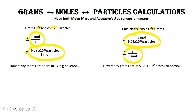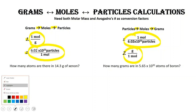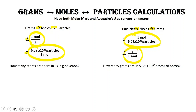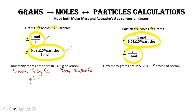I will do the first one with you, and you can practice doing the next one on your own. Let's start so we can see how to set up this problem. The problem asks: how many atoms are there in 14.3 grams of xenon? So what we're given is 14.3 grams of xenon, and what we need is the number of atoms of xenon. We go from grams of A, to moles of A, to particles of A—first using molar mass, then Avogadro's number.